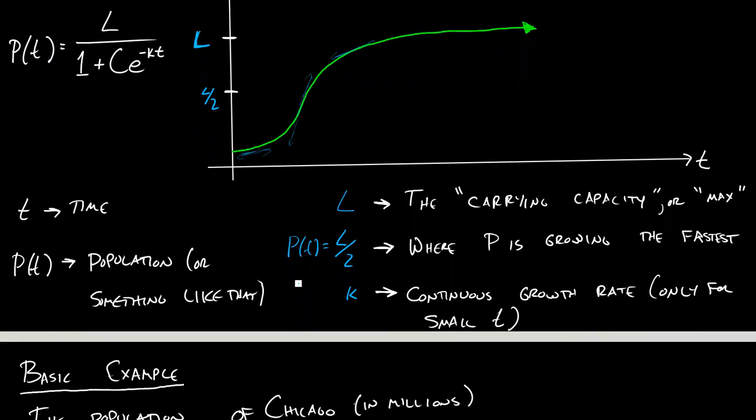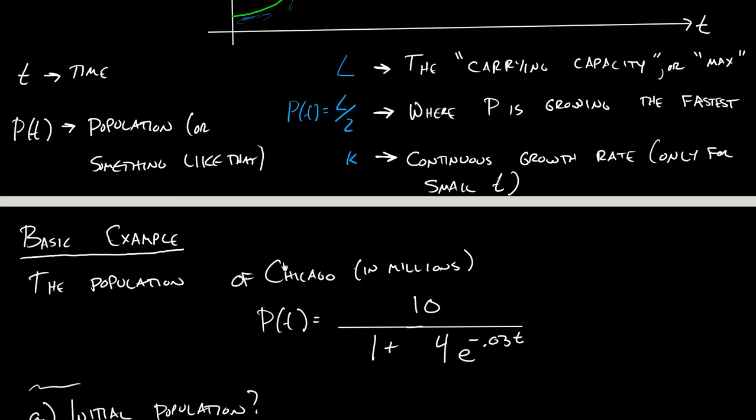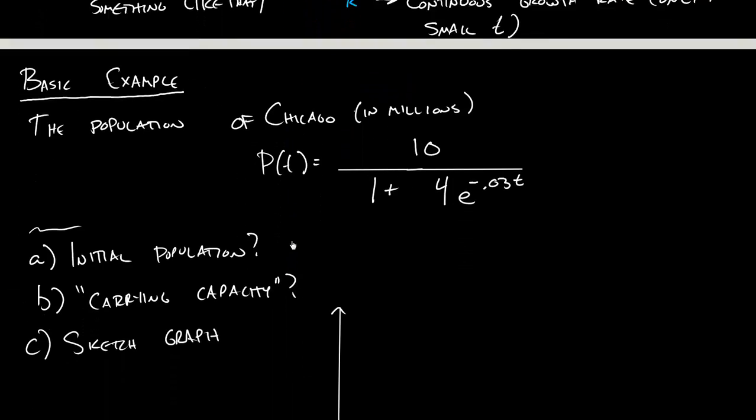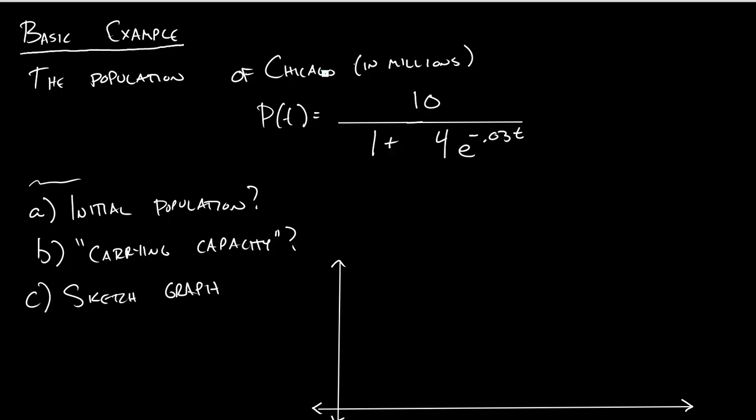So let's just go to a quick example just so we can get a little more intuition about what's going on here. Let's say that the population of Chicago in millions is given by this formula here. So let's just sketch out what it's going to look like.